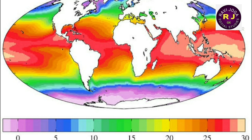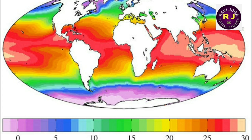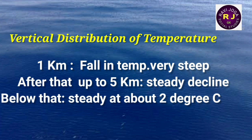The normal temperature in the oceans varies from minus two degrees centigrade to 29 degrees centigrade. Regarding the vertical distribution of temperature, when we go deep into the oceans the temperature decreases. The fall in temperature is very steep for the first kilometer. After that, up to a depth of five kilometers the decline is steady. Below that, the temperature is steady at about two degrees centigrade.